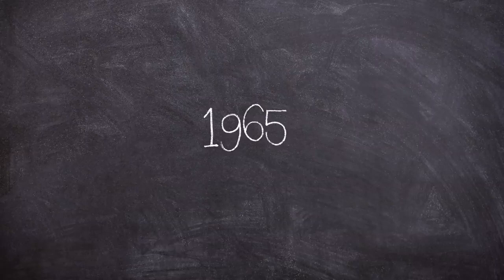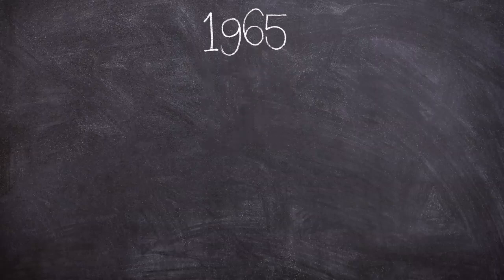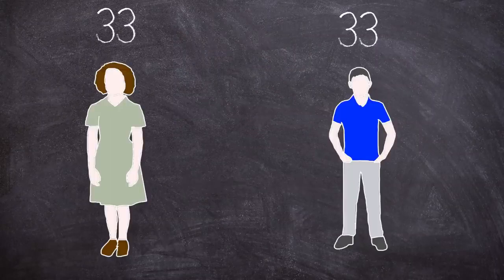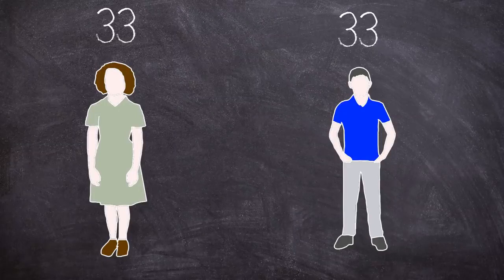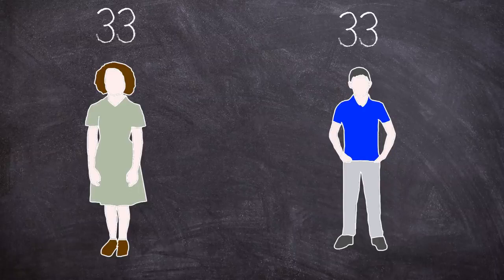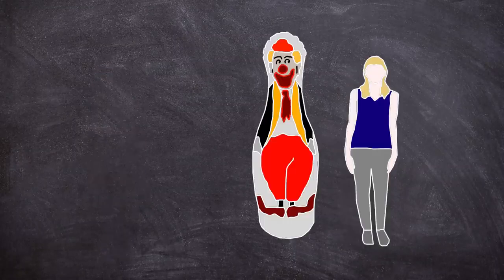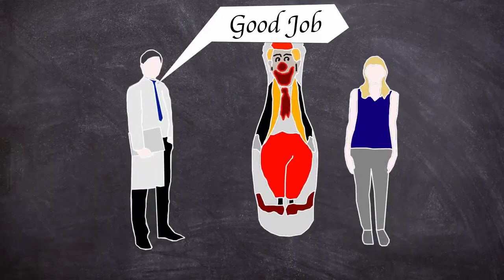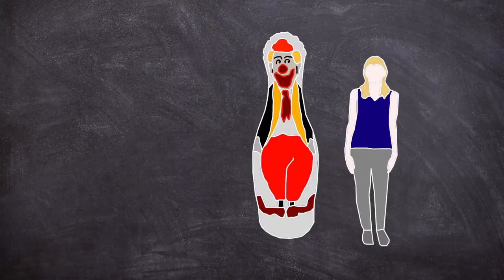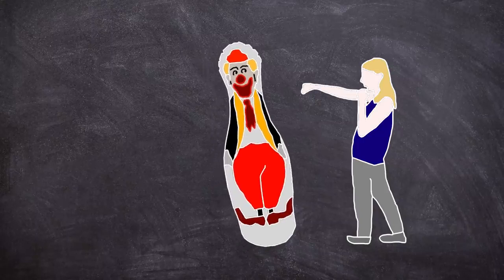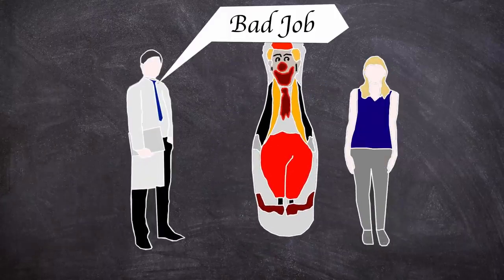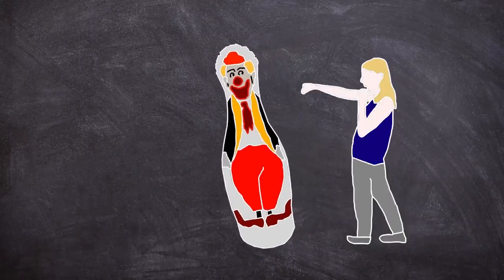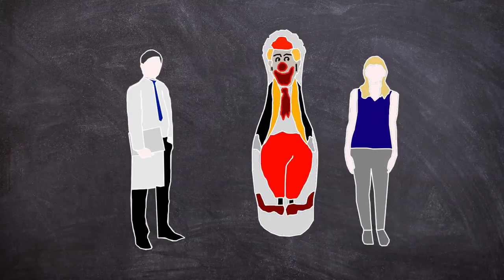A third experiment in 1965 sought out to find if classic conditioning could affect the results. This time 66 children, 33 boys and 33 girls were used for the study. Again three groups were used which were again subdivided into gender. The first group would witness a model display aggression towards the Bobo doll, followed by a researcher praising the model, rewarding them with candy. The second group would witness the same scripted scenario of aggression behaviors, but instead the model received a reprimand and was hit with a rolled wooden golf club. The third group served as the control, and the model had no reward or punishment for the displayed behavior.